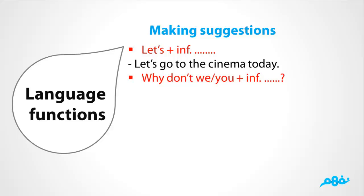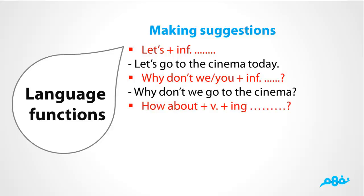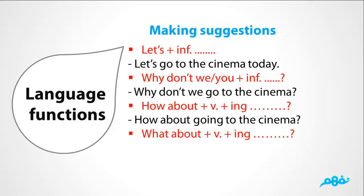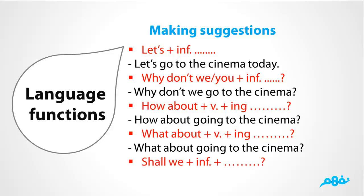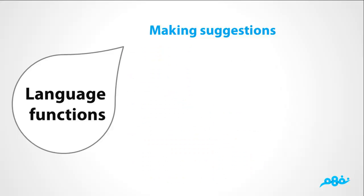Third, 'How about' plus the gerund (verb + -ing) — for example, 'How about going to the cinema?' And the same with 'What about': 'What about going to the cinema?' And finally, we can use 'Shall we?' — for example, 'Shall we go to the cinema?'